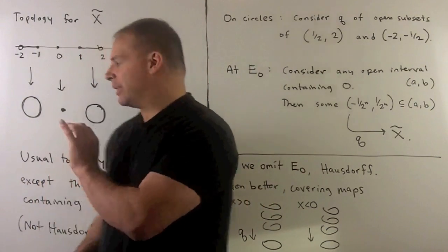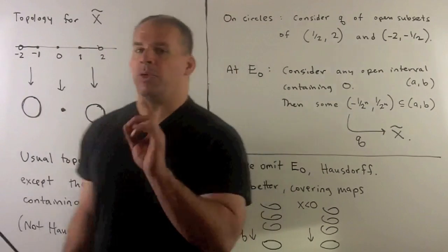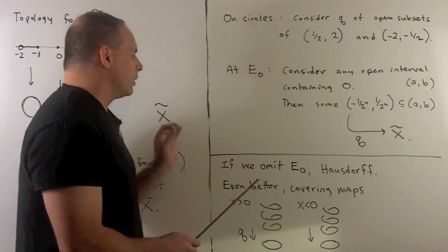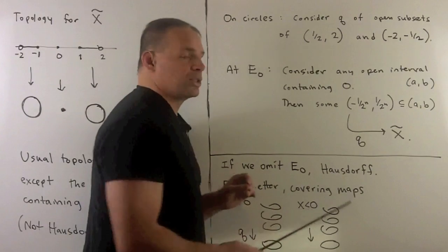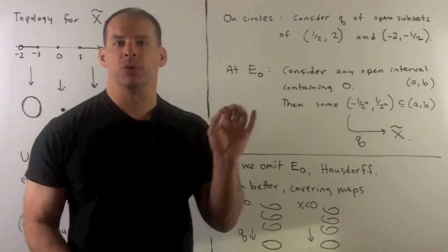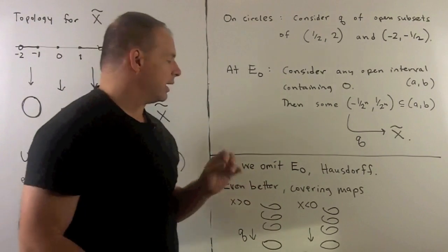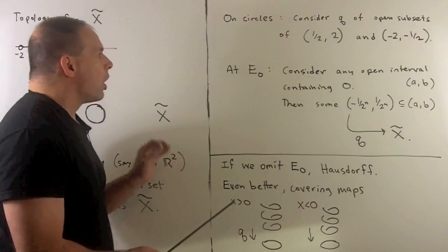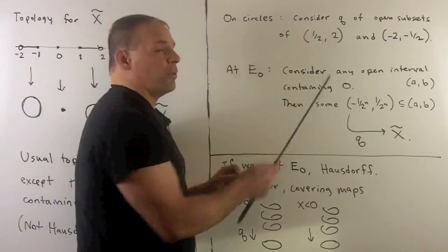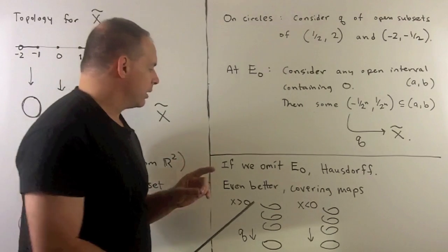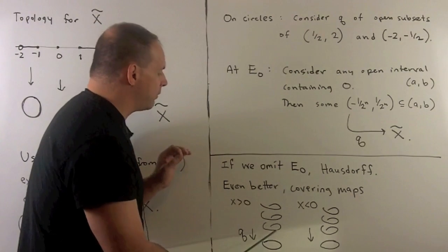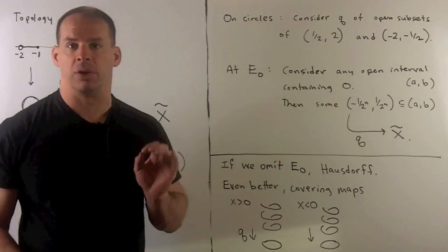By this description, if we throw away E0, we're going to be left with a Hausdorff space - we'll just have the usual union of two circles. Even better, our map Q is going to go from being a quotient map to being a covering map. This is going to have really nice behavior as long as we stay away from E0.